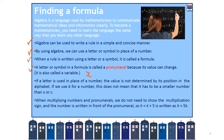When we write X, it's better to write it in a special way. Don't write it as you would in normal writing because that can be confused with a multiply sign. Also, if a letter is used in place of a number, the value is not determined by its position in the alphabet. So if we use B for a number it doesn't mean it's a smaller number than X or C — it's just a different letter.